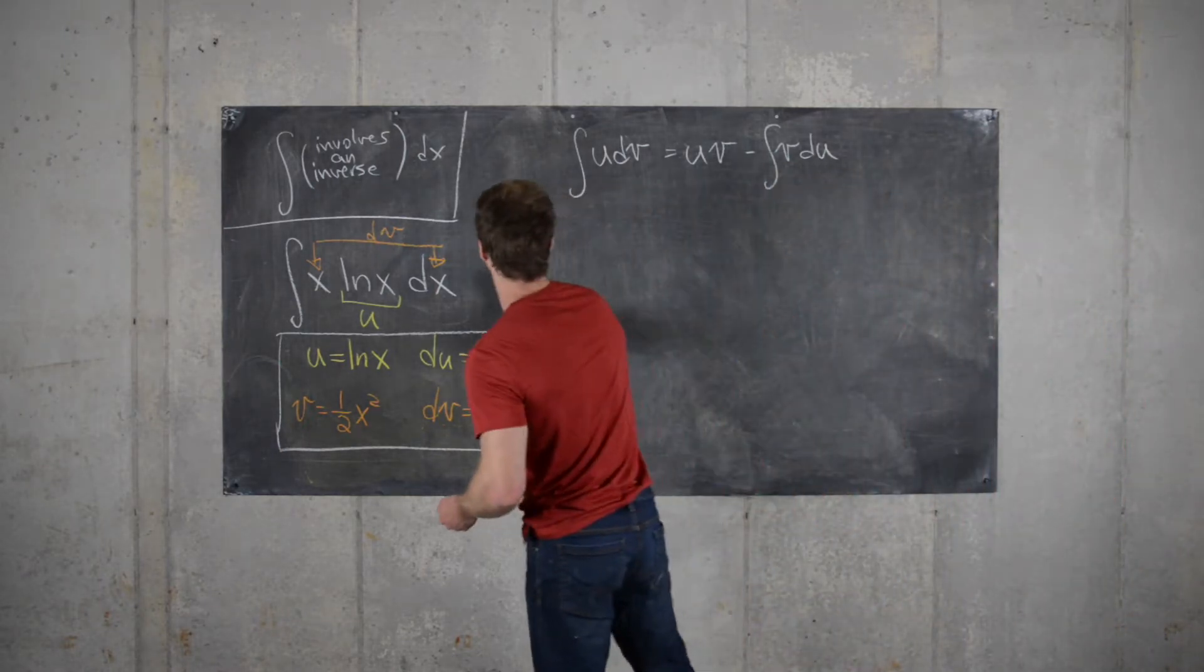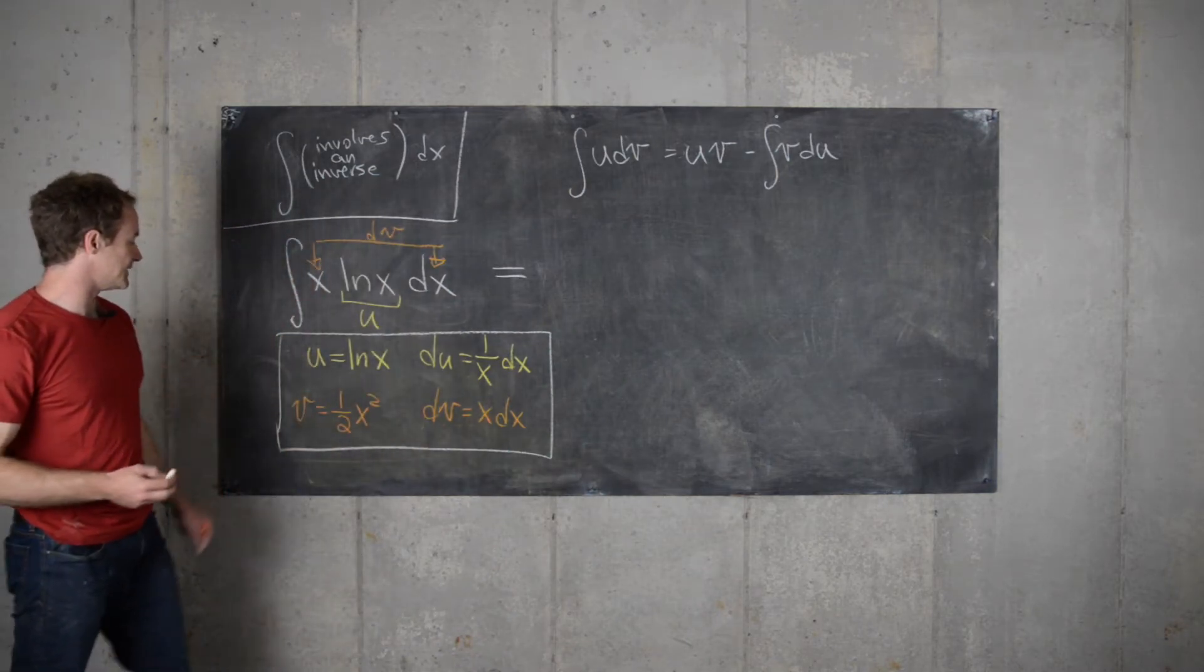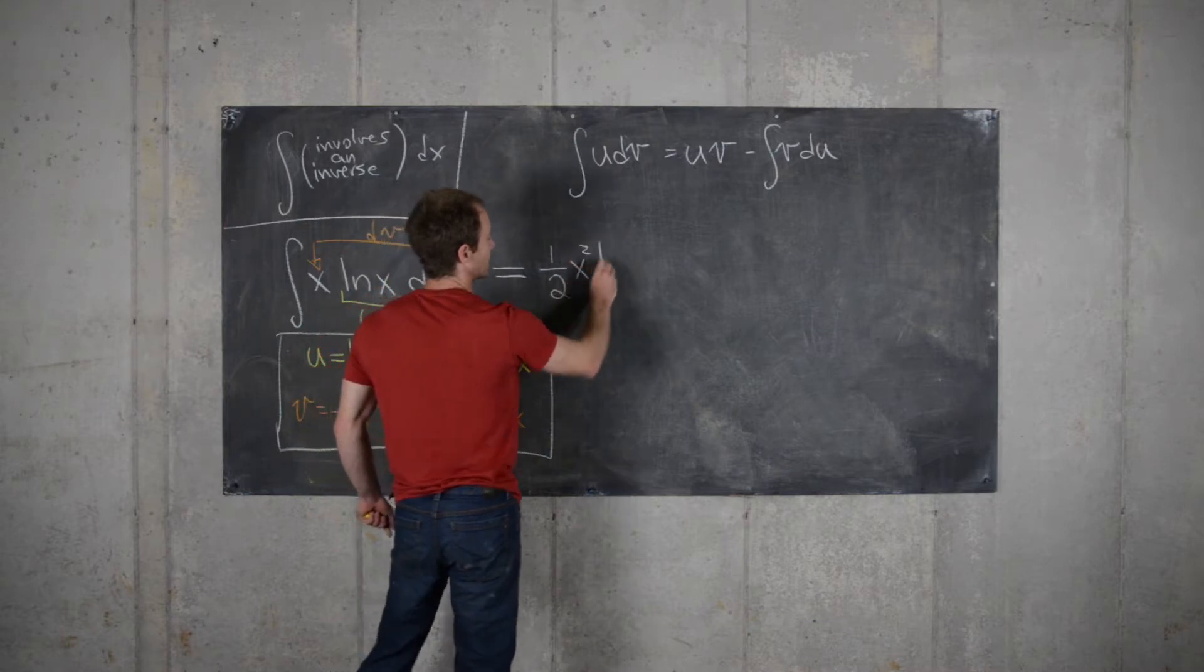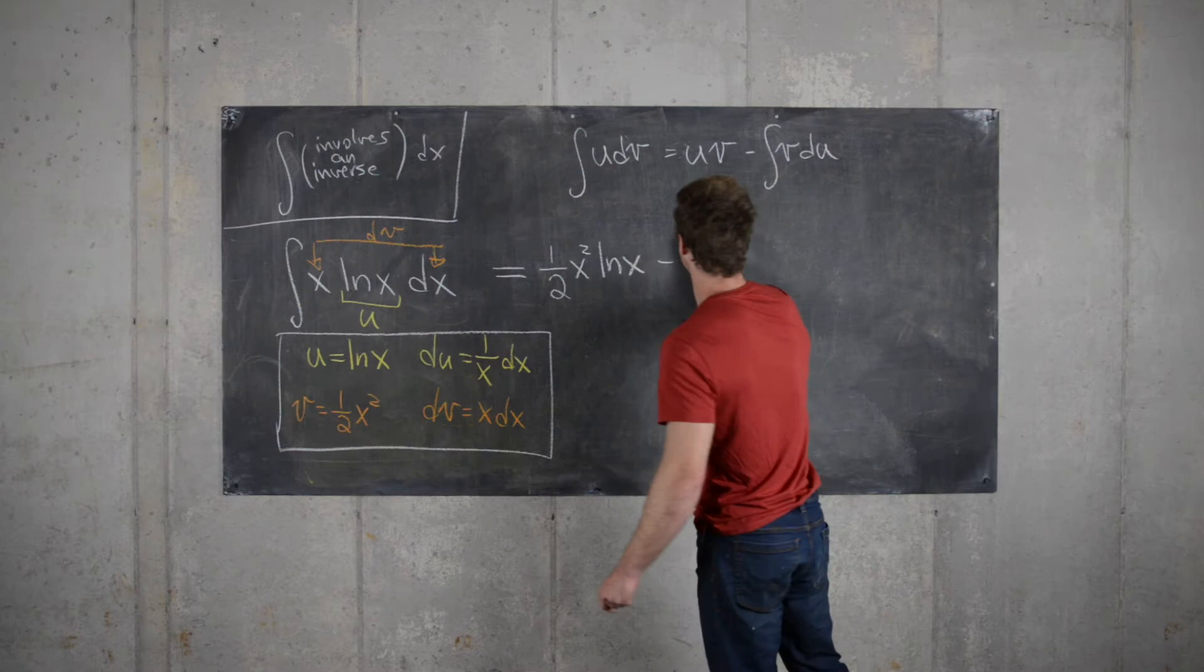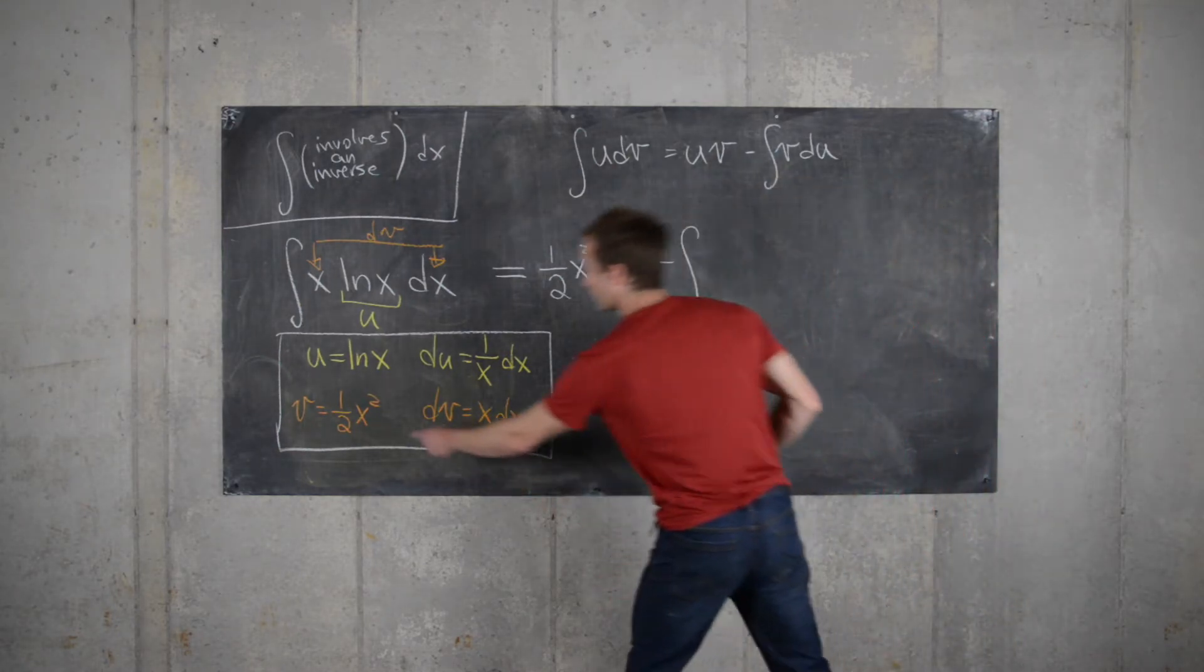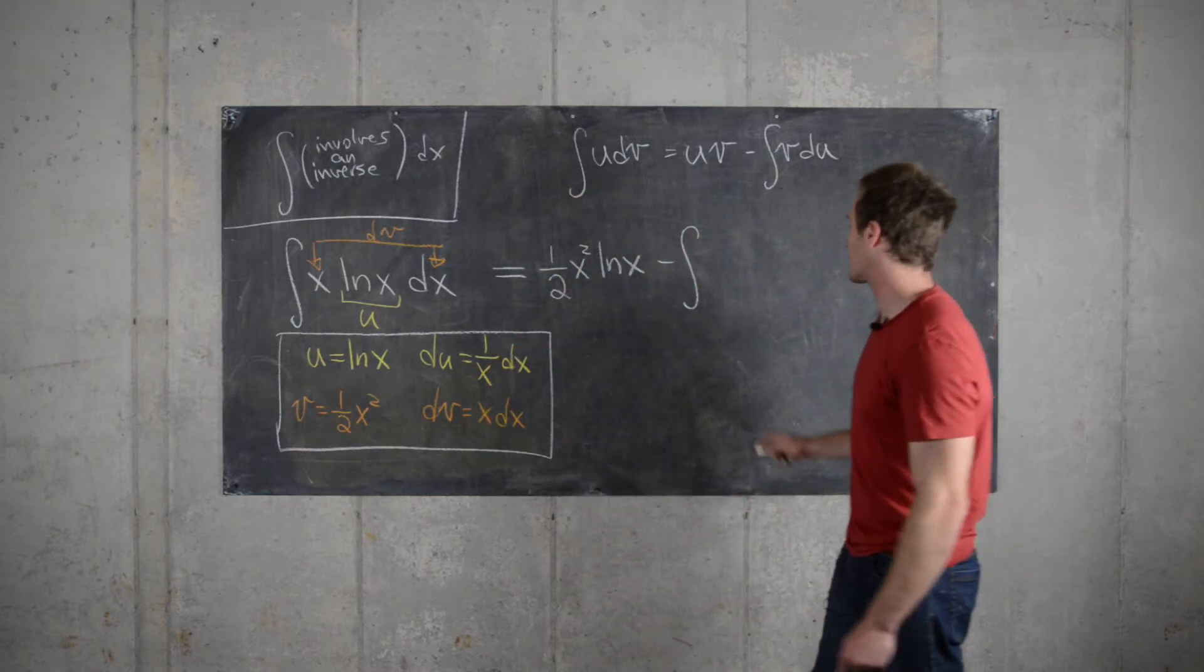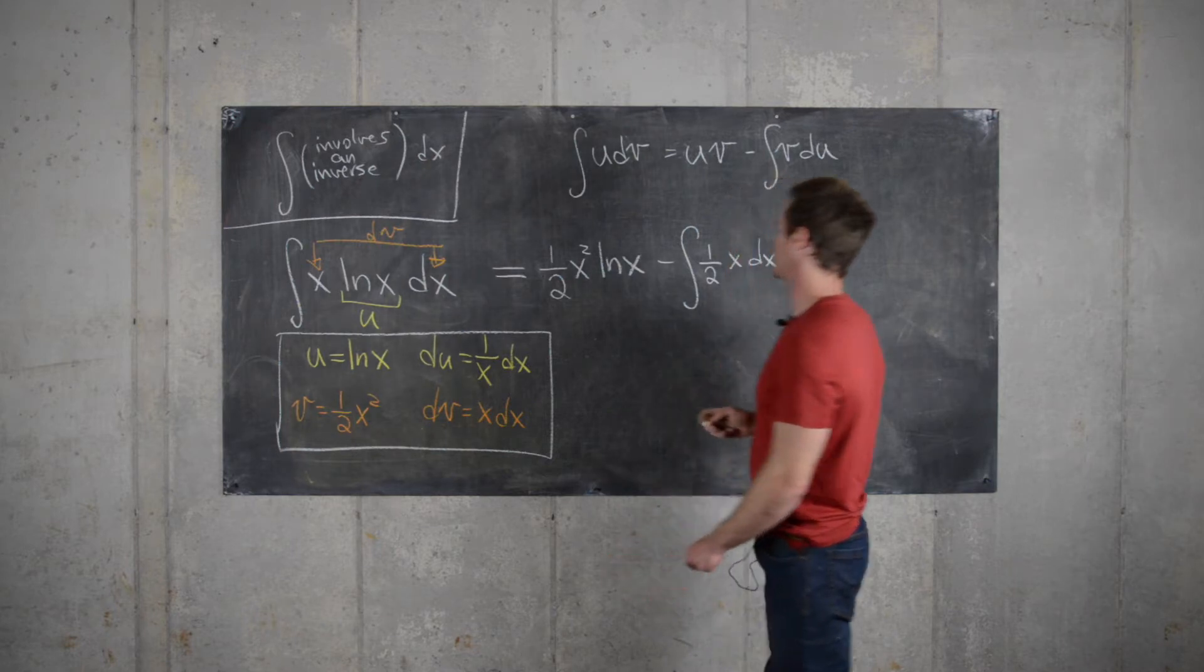So that gives us this is equal to u times v. So we have 1 half x squared natural log of x. Minus the integral of v du. So notice we have x squared over x. That'll cancel. We'll get 1 half x dx.